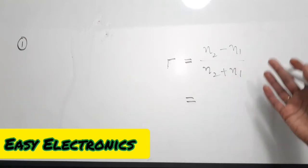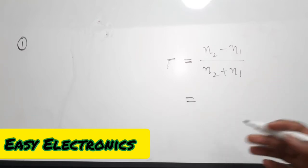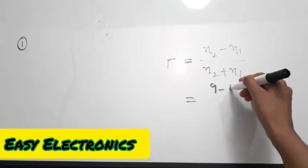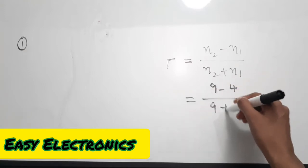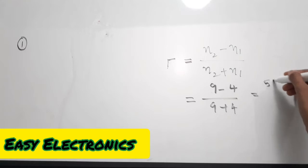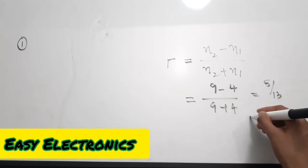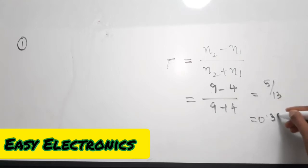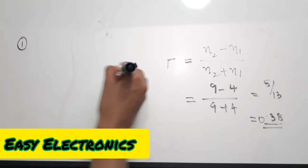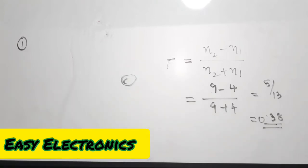Just apply the values of eta-1 and eta-2 to get the reflection coefficient. So 9 minus 4 divided by 9 plus 4 equals 5 by 13, and solving that gives 0.38 as the value for the reflection coefficient. The correct answer is option C, 0.38. Moving on to the second question.